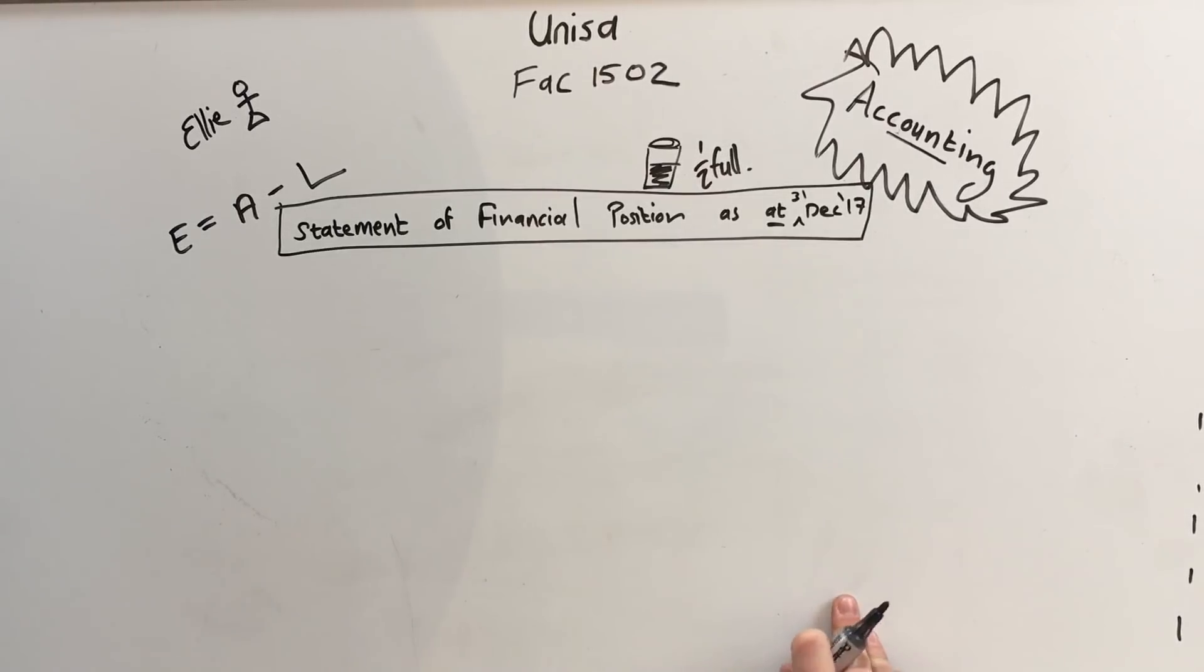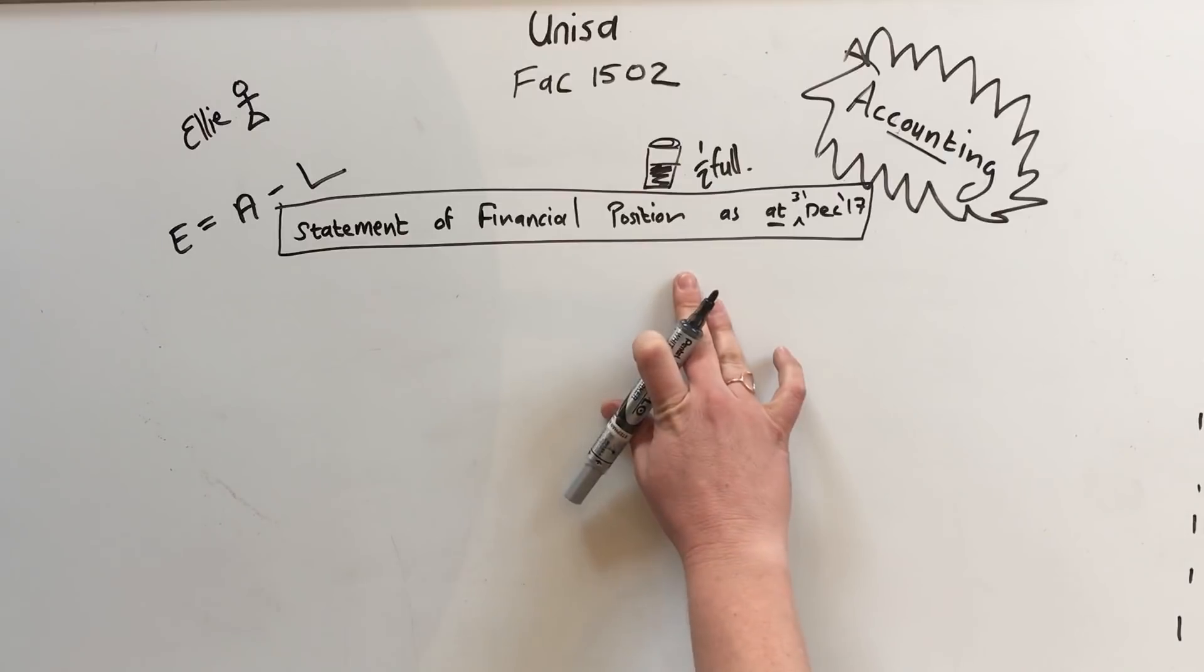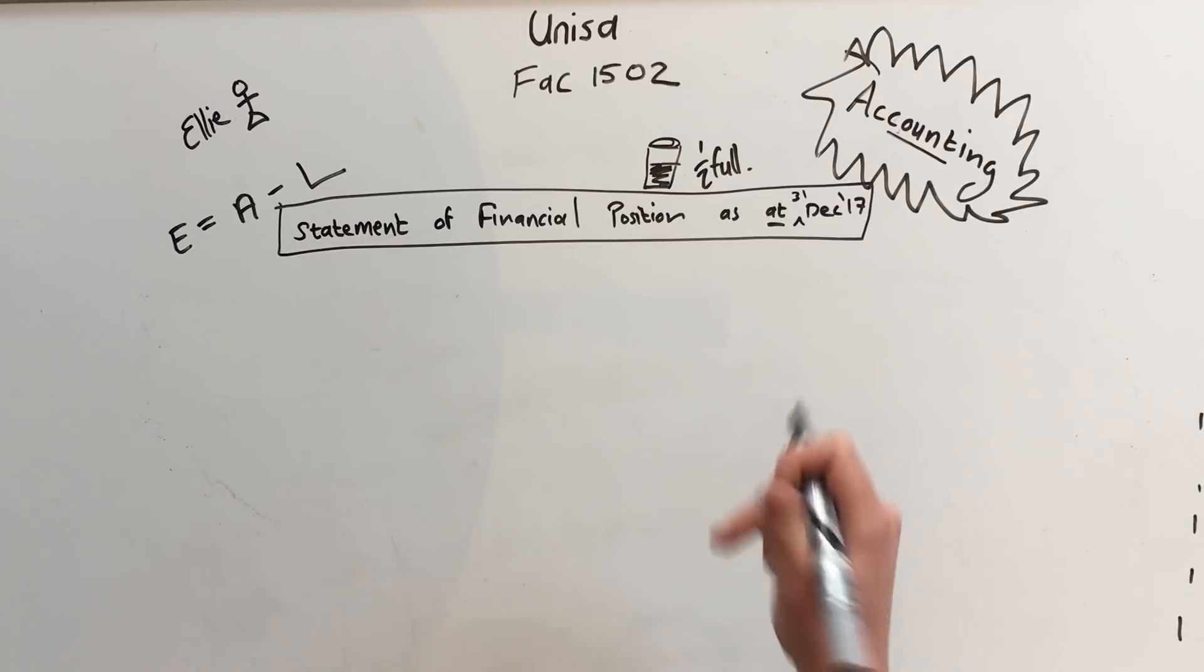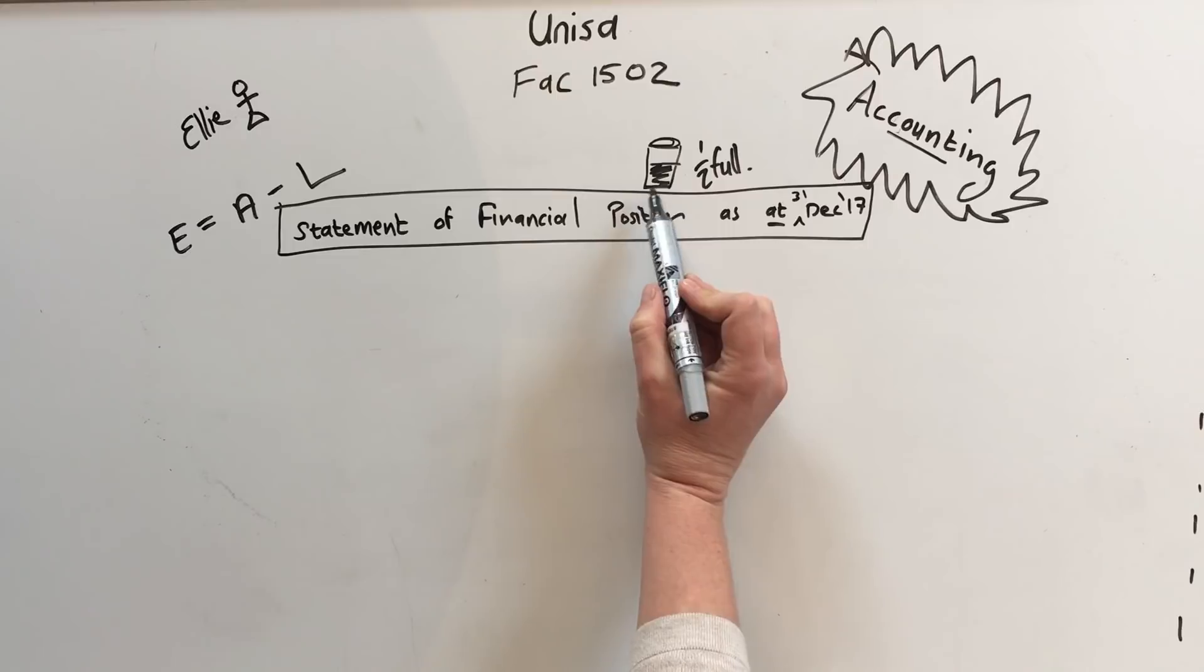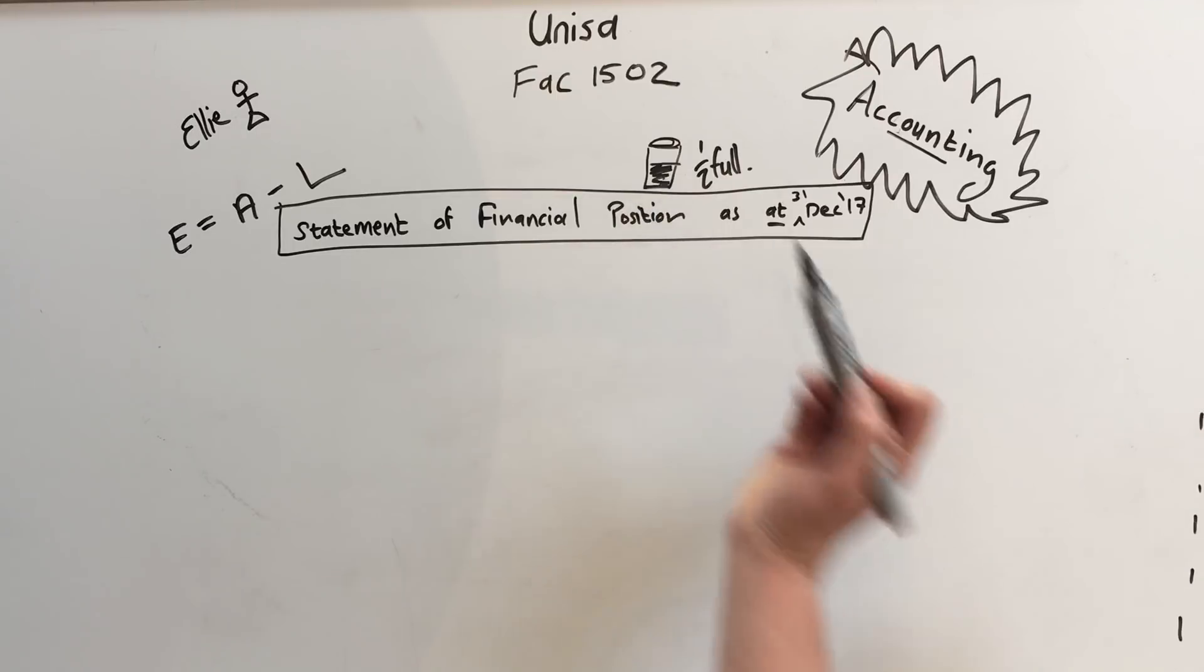Hello and welcome back to Accounting with Ellie. I'm going to continue with the statement of financial position as at 31 December. In the previous video I referred to this as the statement that shows you that the glass is half full.